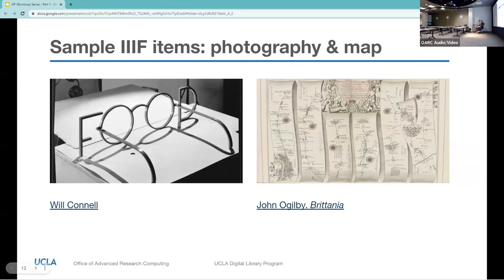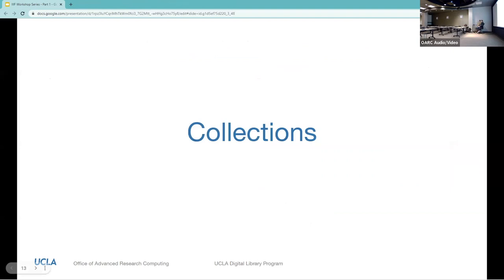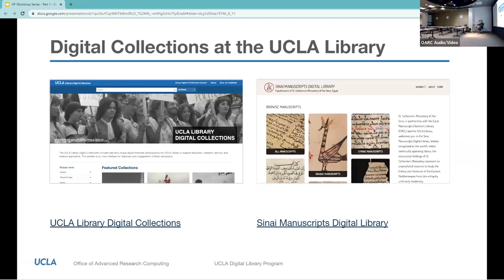Now we want to move on to the collections themselves. The items we just looked at were sourced from various contributing institutions around the world. What we want to illustrate is how eclectic these collections can be — both in content and in form — and still be usable together as part of the research process. Here are two collection sites at the UCLA Library. On the left is the main digital collection site, in which the Gladzor Gospels, Patent Medicine Trade Cards, and Will Connell's collection were accessed. On the right is the Sinai Manuscript Digital Library.